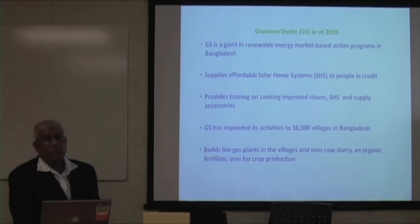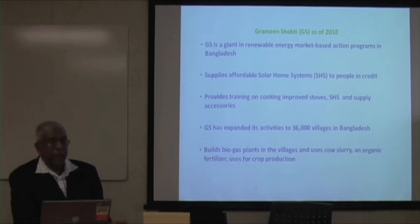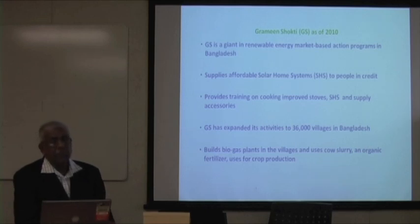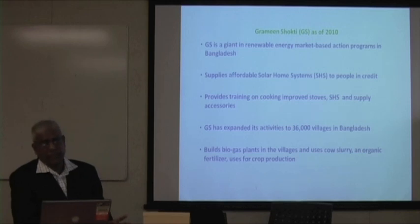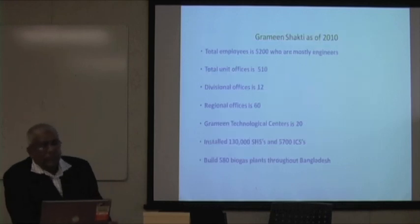Grameen Shakti, as of 2010, is really a giant renewable energy market-based action program in Bangladesh. They have received many international awards. They supply affordable solar home systems to people on credit, provide training on improved cooking stoves, solar home systems, and supply accessories. Grameen Shakti has expanded its activity to 36,000 villages across Bangladesh. It is a big national program now. They build biogas plants in villages and use cow slurry and organic fertilizer for crop production and fish farming.